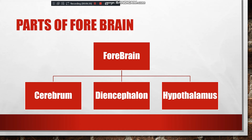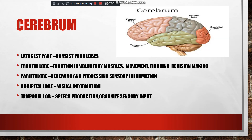Today I will explain about the cerebrum. The cerebrum is the largest part of the forebrain, and since the forebrain is the largest part of the brain, the cerebrum is also the largest part of the brain. The cerebrum consists of four lobes. You can see here: the frontal lobe, the parietal lobe, the occipital lobe, and the temporal lobe.